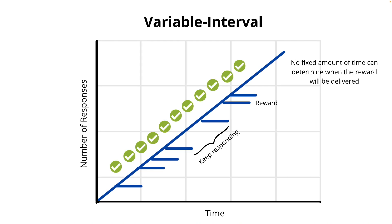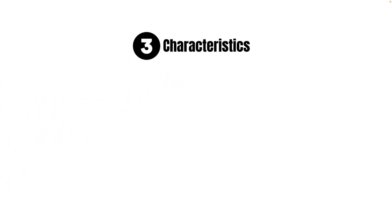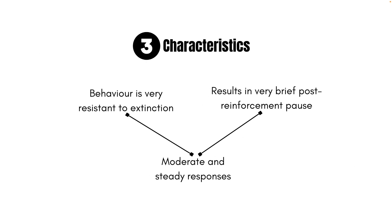There are three key characteristics of the variable interval schedule. Similar to the variable ratio schedule, it is very resistant to extinction due to its anticipatory nature. The rate of response is not as high as the variable ratio schedule, but is equally steady. Additionally, the reinforcement leads to very minimal pause after reinforcement has been delivered to the animal.